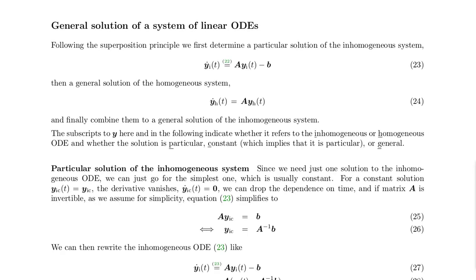If you want to find a solution to an inhomogeneous system of linear ODEs written in vector notation, the superposition principle suggests a good strategy: find a particular solution of that differential equation, then find a general solution to the corresponding homogeneous differential equation, and combine these two solutions to get a general solution to the inhomogeneous system.